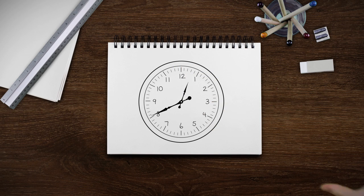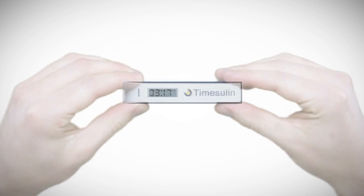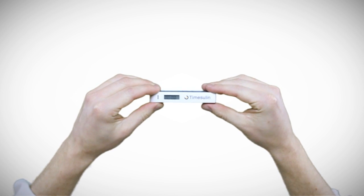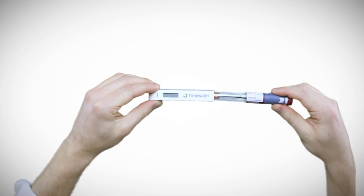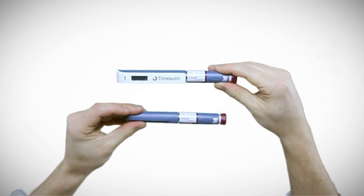That's why we created Timesulin. Timesulin is a timer-enabled replacement cap for your insulin pen. Simply put, Timesulin shows how long it's been since your last insulin shot, helping you avoid a dangerous accidental double dose.